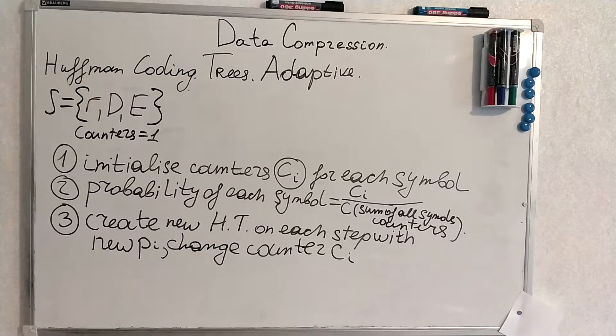So we divide it by sum of all symbols' counters. On each step we create new Huffman tree and new probabilities. We update counters and in such a manner build a tree until all symbols are gone.